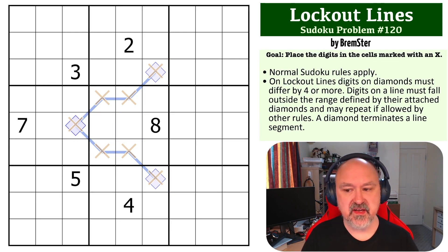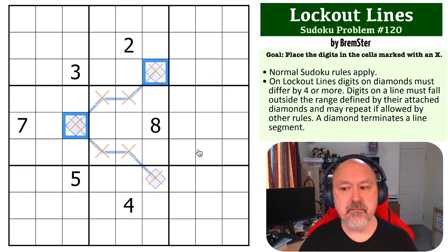And the way lockout lines work, and this is a constraint that some people seem to struggle with, is the digits on the diamonds at the end of a line must differ by four or more.